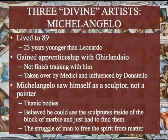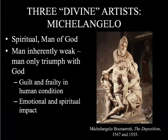Finally, Michelangelo — we're not going to talk about him a lot because we've covered him in class. He lived to 89 and was about 23 years younger than Leonardo. He gained an apprenticeship with Ghirlandaio, didn't finish training before he was taken over and adopted by the Medici, and was influenced by Donatello. Michelangelo saw himself more as a sculptor than a painter — he was focused on titanic bodies, believed he could see the sculptures inside the block of marble and just had to free them, and believed in the struggle of man to free the spirit from matter.